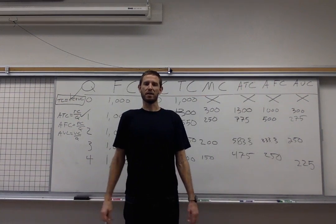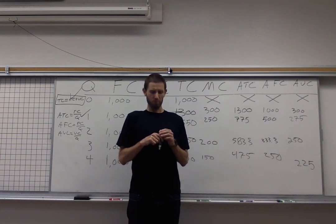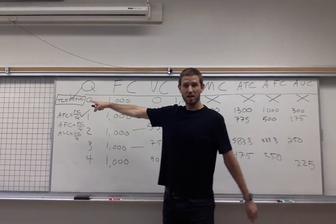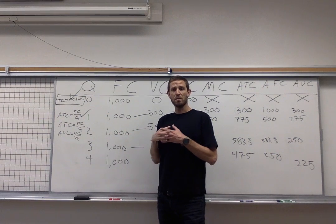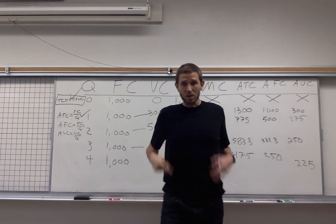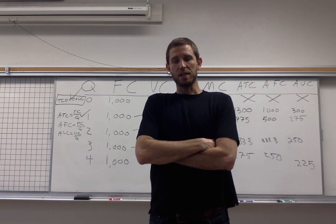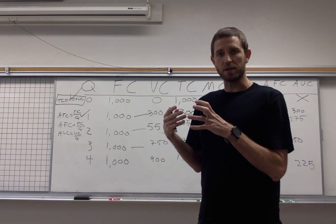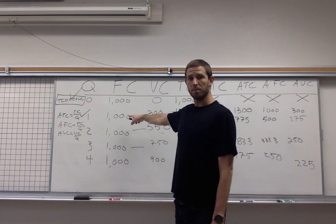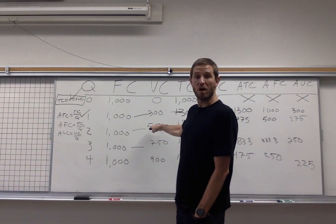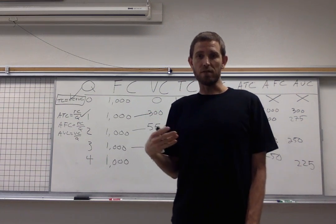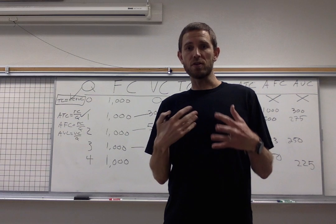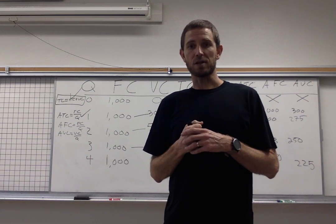And there we've done the whole entire table. The key principles to stress here: you have to know how these costs fit together. Total cost is fixed plus variable. All the average cost measures are just their corresponding cost divided by quantity. Marginal cost is the change in total cost. Know those relationships, and then use whatever information is given for each row to work out the rest. It's involved, but once you've practiced it, not so terrible.